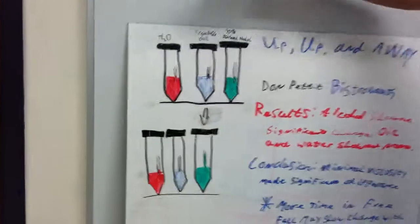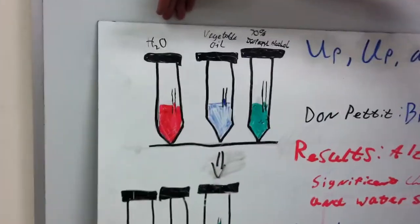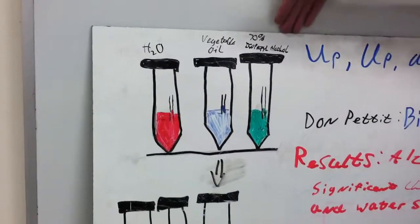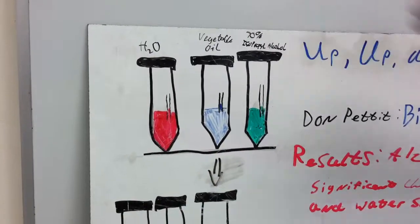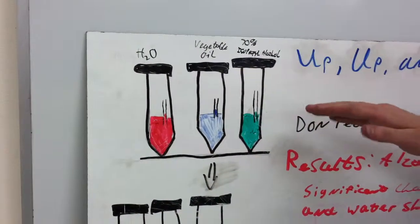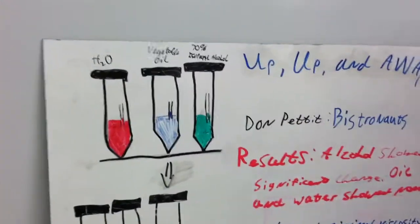For my experiment, the different tools I used were water, vegetable oil, and 70% isopropyl alcohol. And I had them in some tubing that was made out of disposable eye droppers.